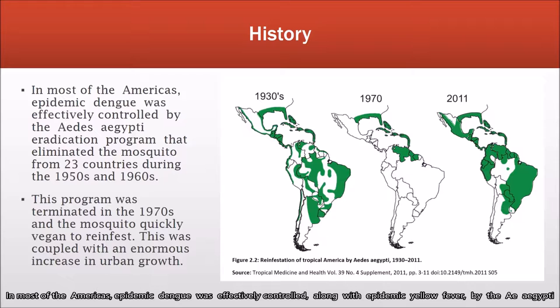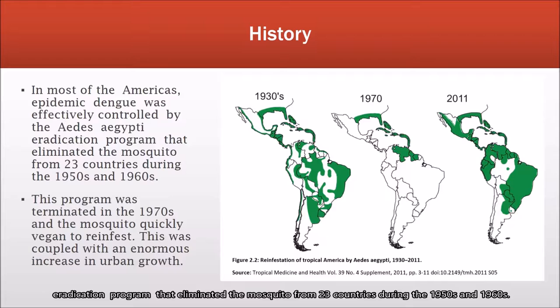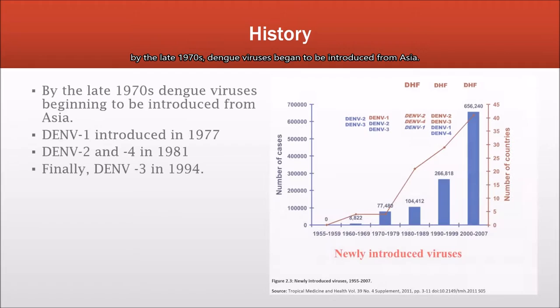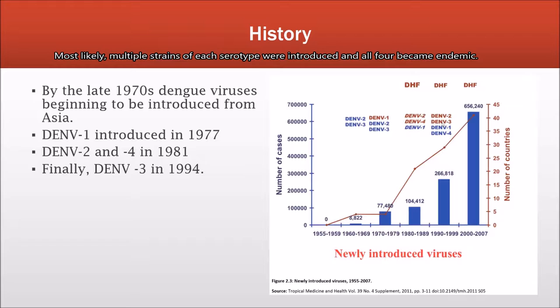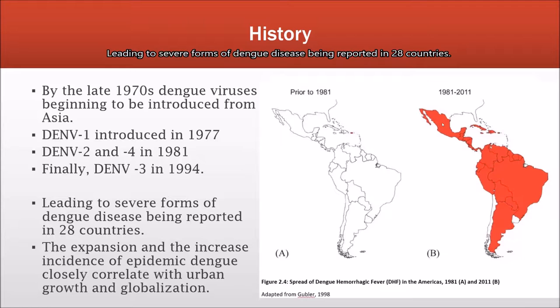In most of the Americas, epidemic dengue was effectively controlled alongside epidemic yellow fever by the Aedes aegypti eradication program that eliminated the mosquito from 23 countries during the 1950s and 60s. When this program was terminated in the 1970s, the mosquito began to reinfest tropical countries in the region. By the late 1970s, dengue viruses began to be introduced from Asia: serotype 1 in 1977, followed by serotypes 2 and 4 in 1981, and serotype 3 in 1994. Most likely, multiple strains of these serotypes were introduced and all four became endemic, leading to severe forms of dengue disease being reported in 28 countries.